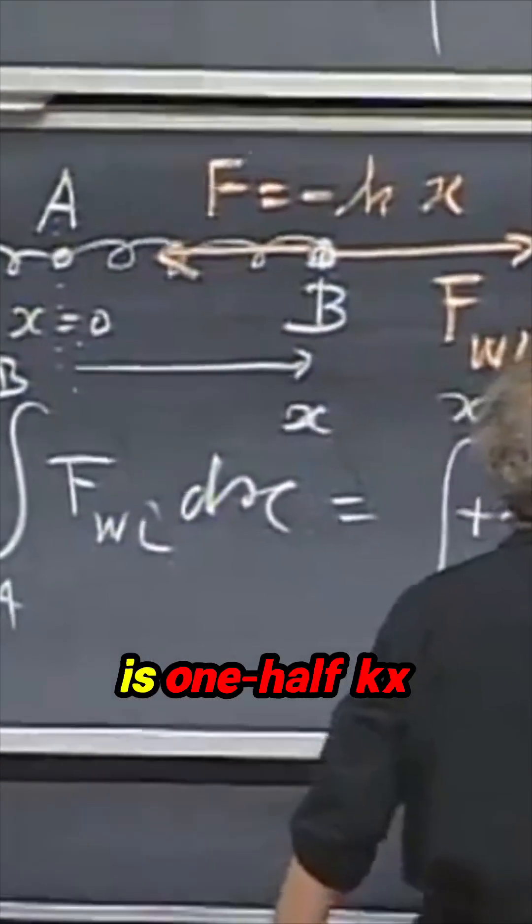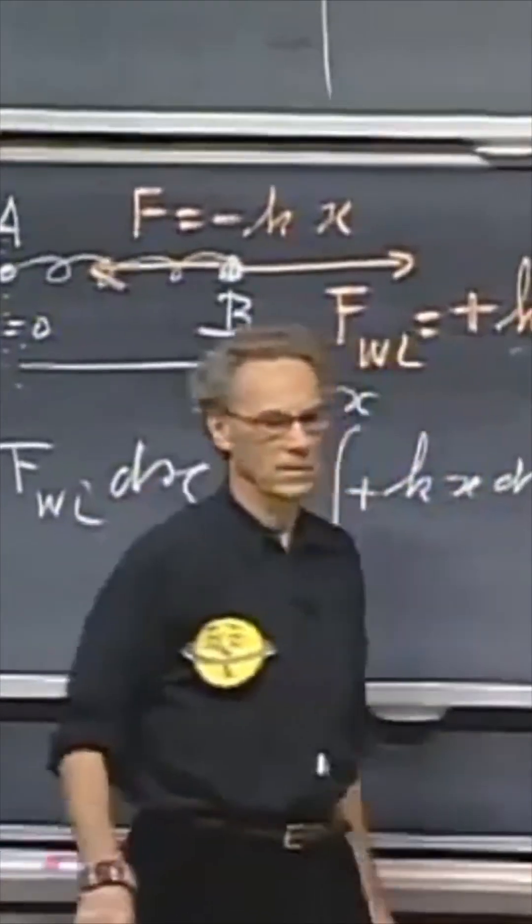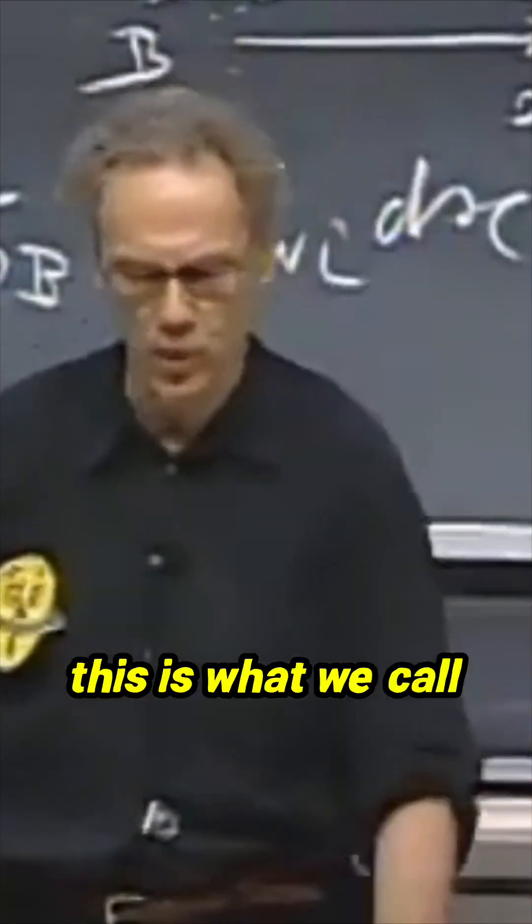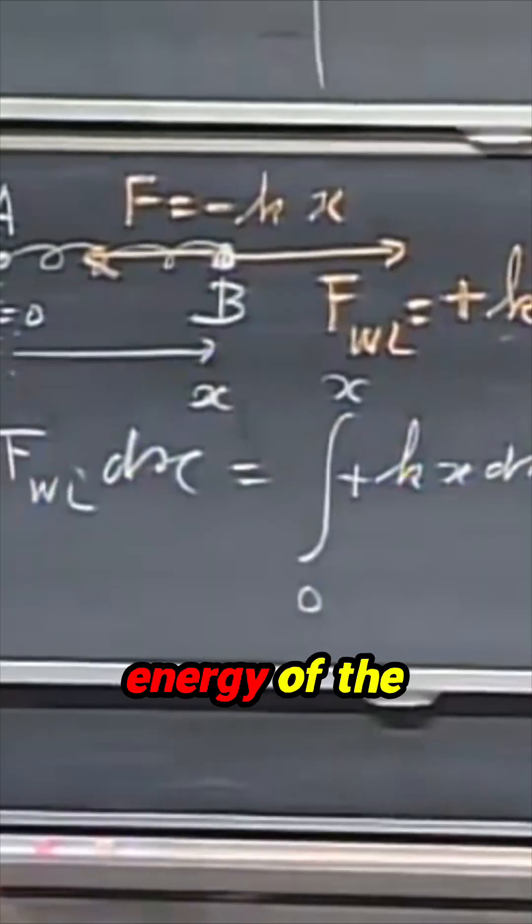And that is one-half kx squared. And this is what we call the potential energy of the spring.